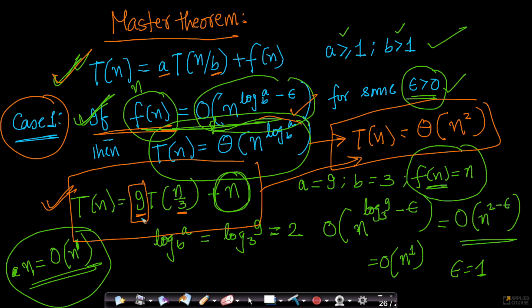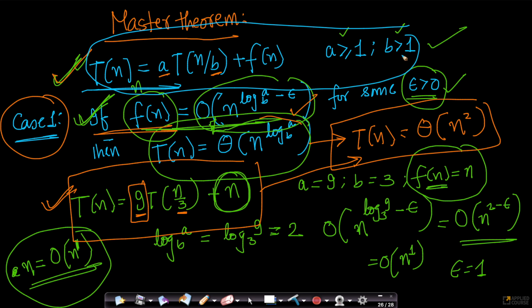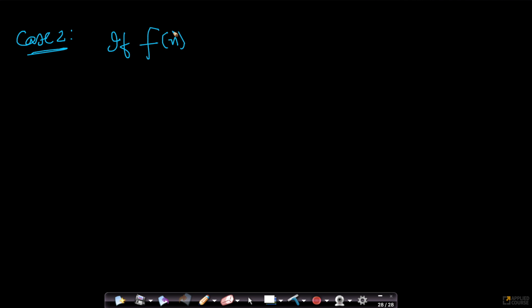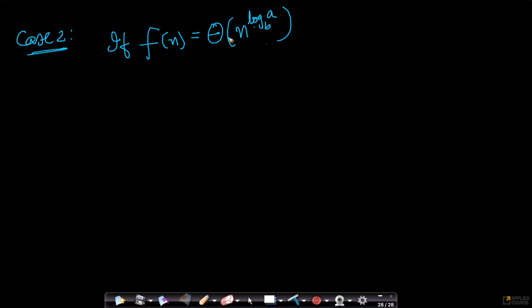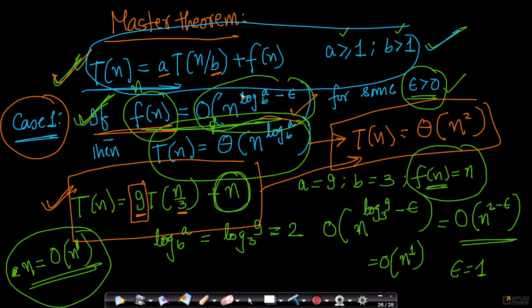Now let's look at Case 2. The recurrence still needs to be of the form T(n) = a·T(n/b) + f(n) with a ≥ 1 and b > 1 — this is always required. In Case 2, if f(n) = Θ(n^(log_b(a))), meaning f(n) is tightly bounded both above and below by n^(log_b(a)), then T(n) = Θ(n^(log_b(a)) · log n).